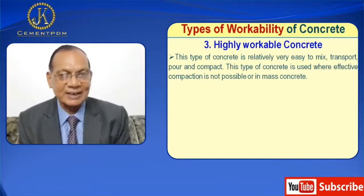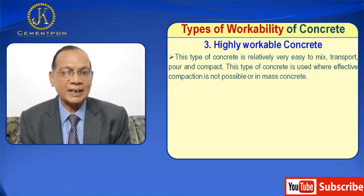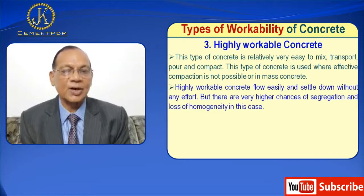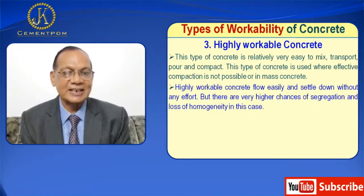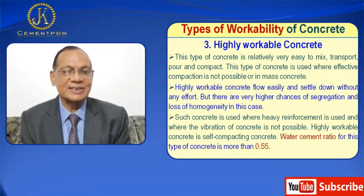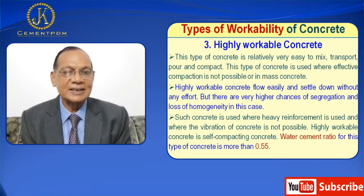Third is highly workable concrete. This type of concrete is relatively very easy to mix, transport, pour, and compact. It is used where effective compaction is not possible or in mass concrete. Highly workable concrete flows easily and settles down without any effort. However, there are higher chances of segregation and loss of homogeneity. Such concrete is used where heavy reinforcement is used and where vibration of concrete is not possible.